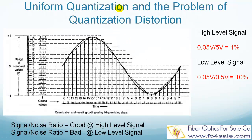Quantization is the process of converting the obtained samples into discrete digital values. The most basic type of quantization is called uniform quantization. In uniform quantization, the vertical axis, which represents the amplitude, is divided into equal-sized steps, as shown in this figure. The range between 1 volt and minus 1 volt is divided into 16 steps, each step representing 0.125 volt. All samples whose amplitude falls within a step take the same step value. However, the quantization process introduces an error, because the real amplitude of a sample is replaced by an approximate value. This error is called quantization noise or quantization distortion.